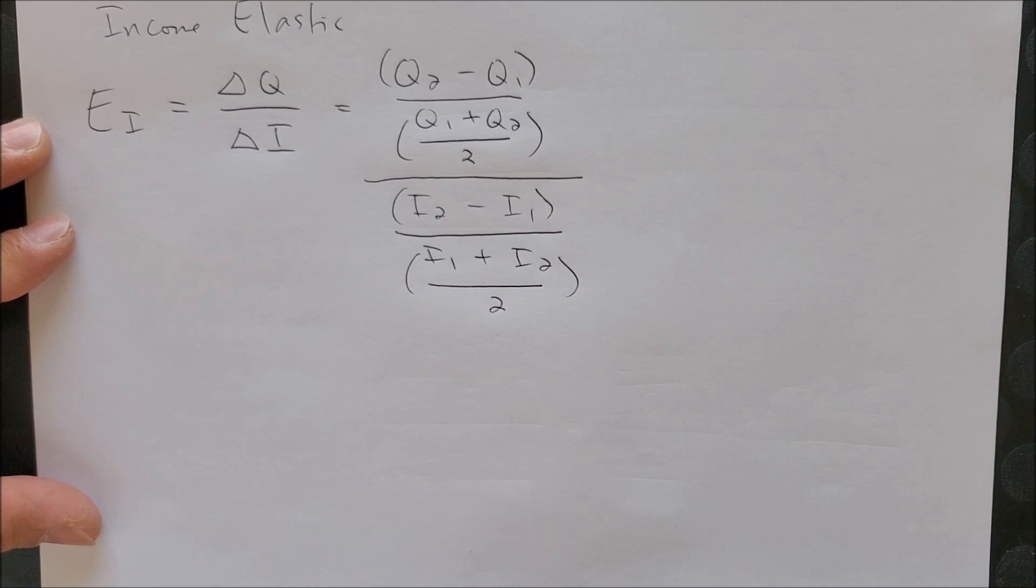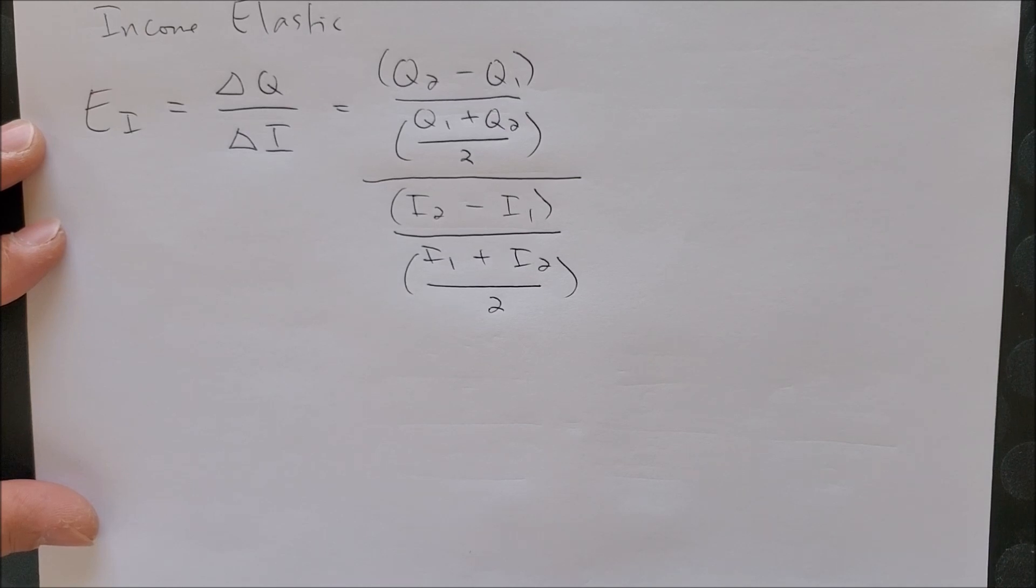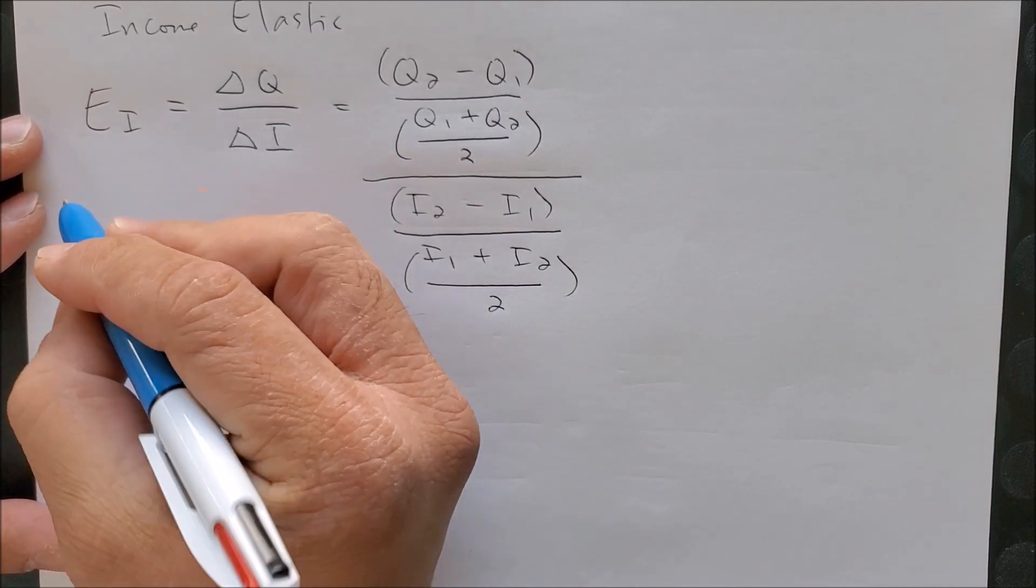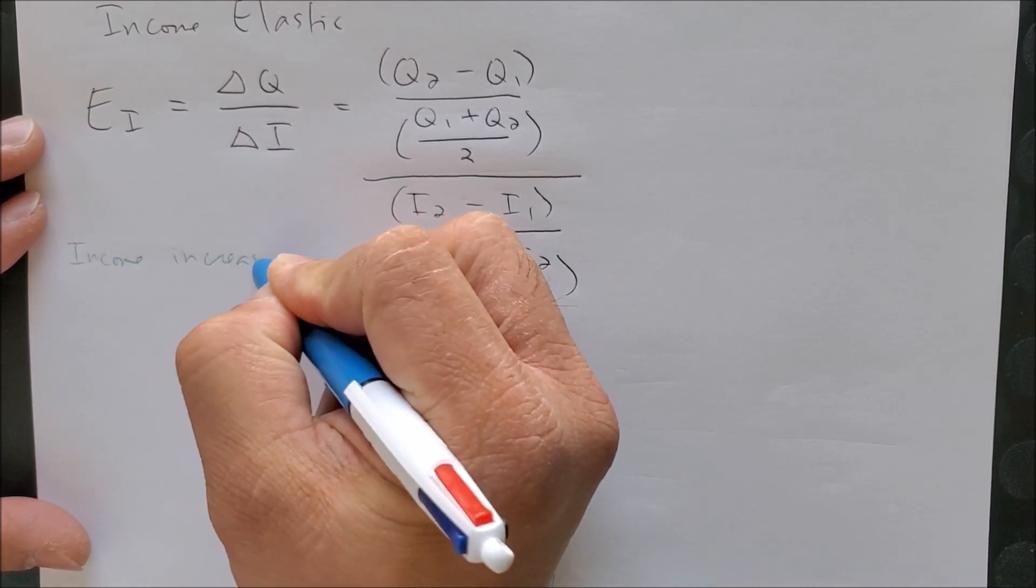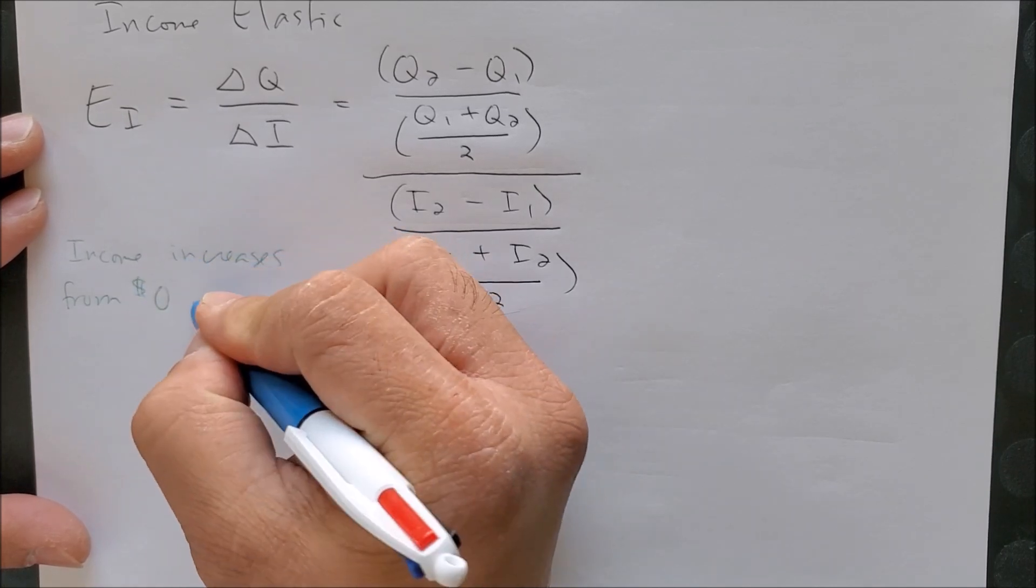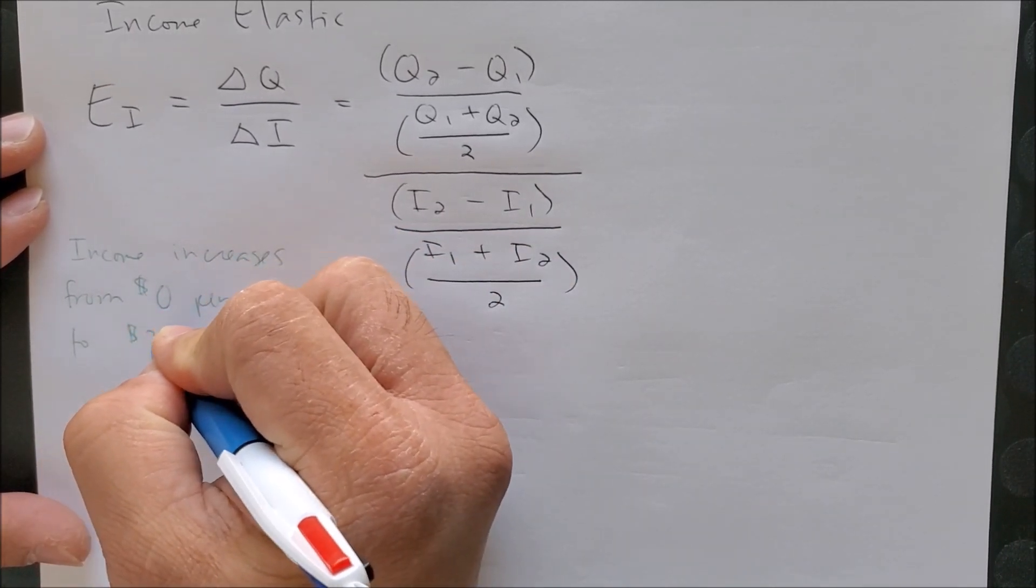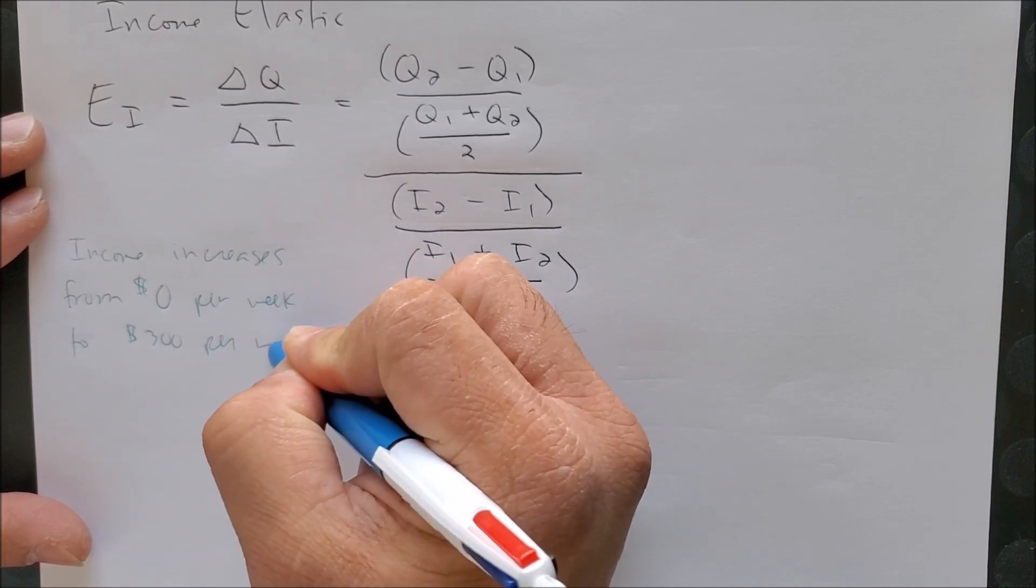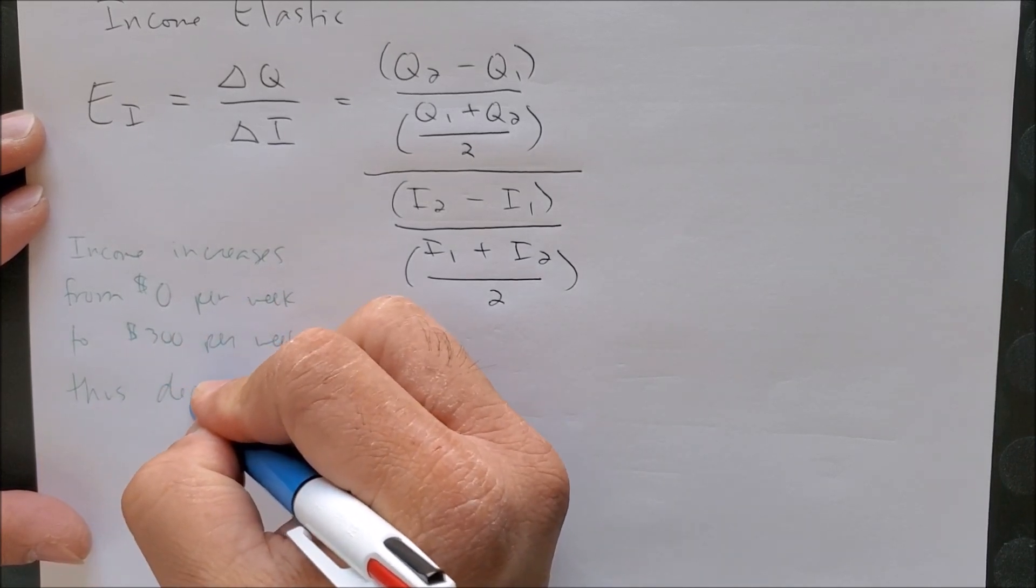The reason why it's useful is because when we have numbers that begin with zero, there's a way to still calculate the income elasticity. For example, here we can put income increases from zero dollars per week to three hundred dollars per week, thus decrease consumption